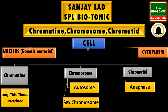When you look at a cell, the cell has two parts: one is nucleus and second is cytoplasm. This nucleus encloses genetic material, which is in three forms — chromatin, chromosome and chromatid. Now, chromosomes are of two types: autosomes and sex chromosomes. Autosomes control mostly the body characters, whereas sex chromosomes control the sex of the individual.